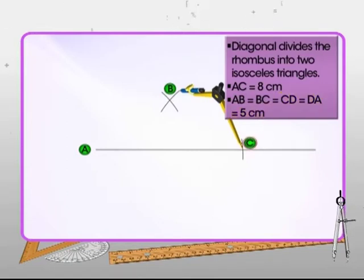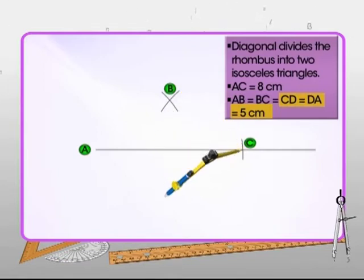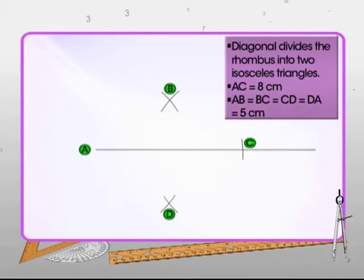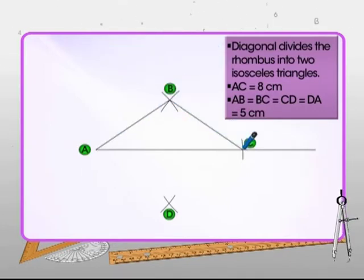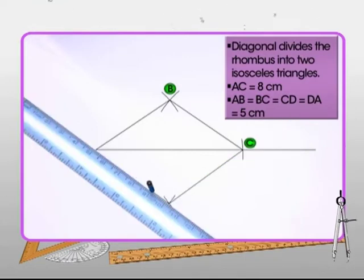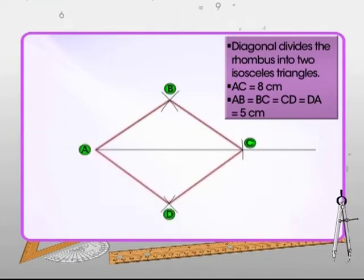Now to obtain triangle ADC, you need to locate point D. Thus, with C as center and radius equal to CD, draw an arc opposite to point B. Since AD is equal to CD, draw another arc from center A with same radius to intersect the previous arc at point D. Join AB, BC, CD, and DA to obtain the rhombus ABCD.